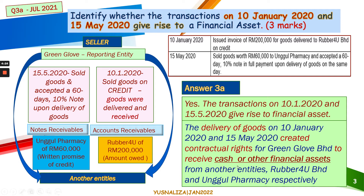So the customer has the contractual obligation to pay our company, and we in turn have the contractual obligation to deliver goods. In return for that, we have the contractual rights to receive cash or financial assets from the two companies respectively.